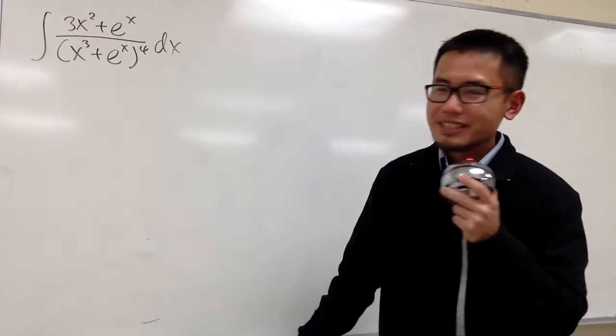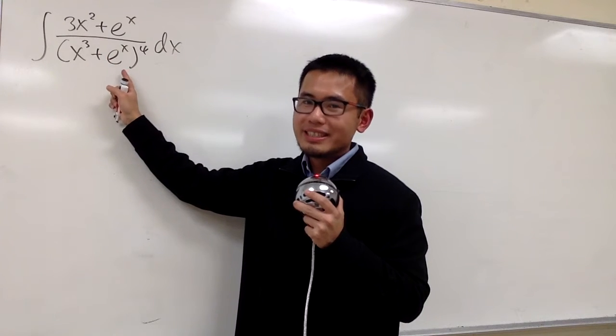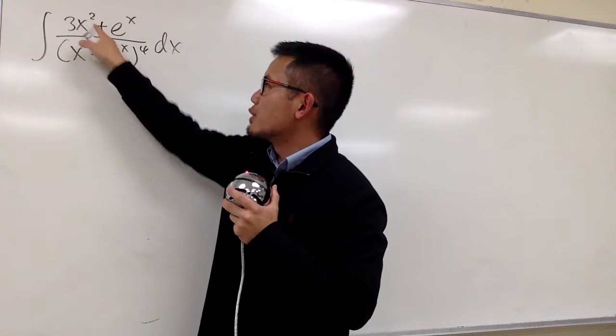I'm going to show you guys how to do this integral, and you see that here we have x to the third power plus e to the x. And on the top, we have 3x squared plus e to the x.